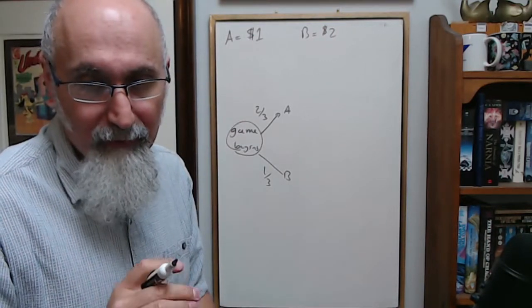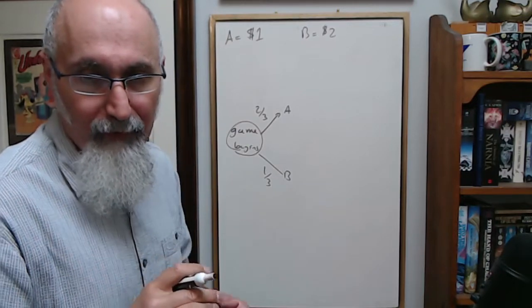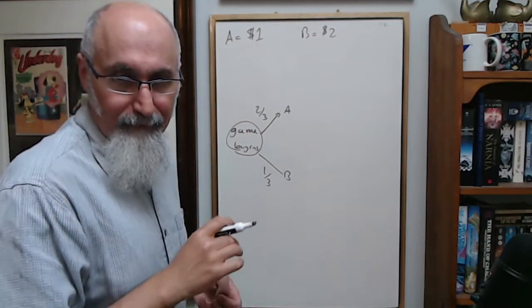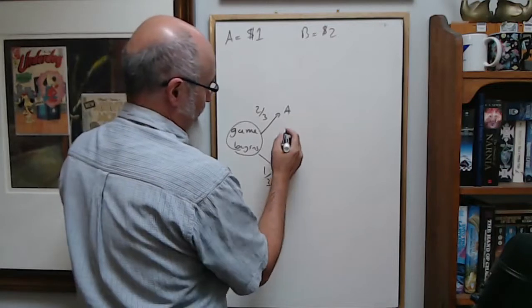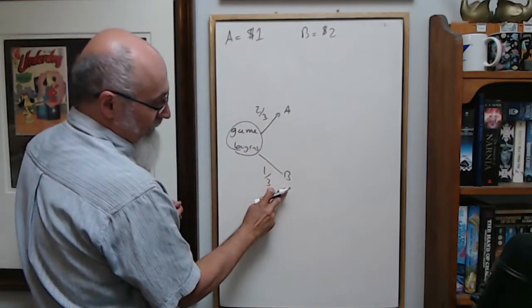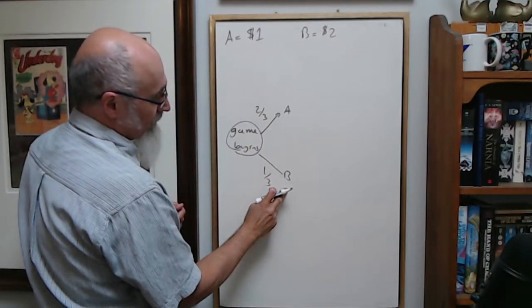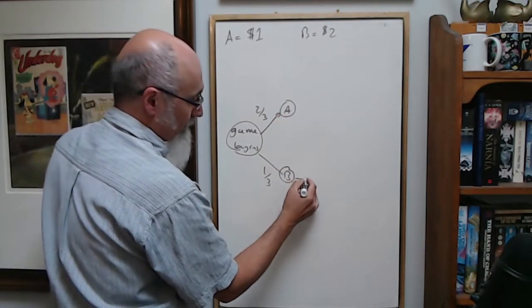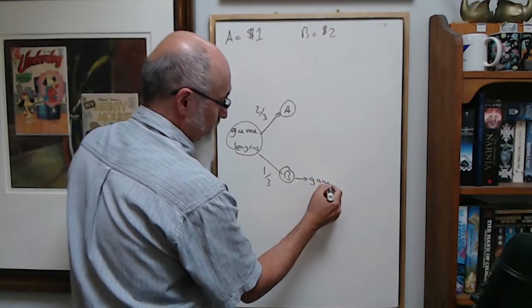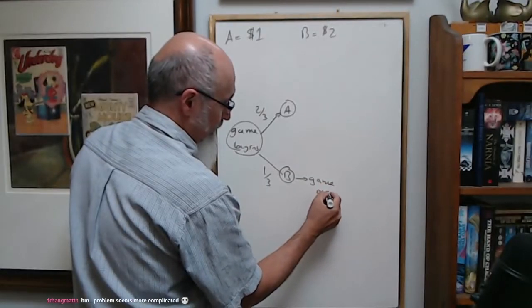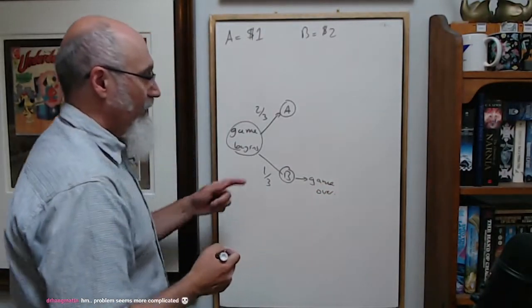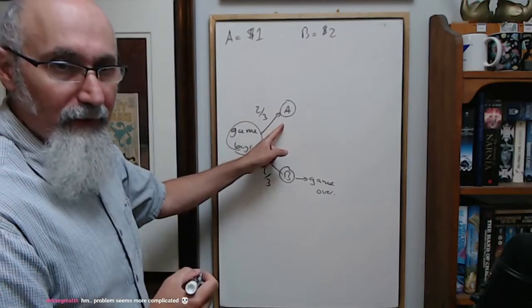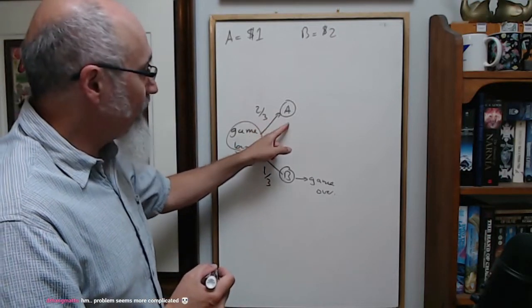Person A begins with $1, Person B begins with $2. Whoever runs out of money, the game is over. Now, if Person B wins, because Person A only had $1, game over.